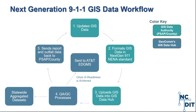Here is the initial general workflow of the data lifecycle in the Next Generation 9-1-1 project. The different colors indicate who is responsible for each step: green indicates the GIS data authority — whether the county or the PSAP — and blue boxes indicate Geocom's GIS Data Hub. At a high level, the initial GIS onboarding process begins with the GIS data being updated by the data authority. They format it in the NENA I3 standard and upload it into GIS Data Hub. GIS Data Hub then performs QA/QC checks and sends reports back to the submitting agency for review and updates. This process continues until they are deemed I3-ready — achieved when the address-to-road centerline match rate is at 98% or above and there are no critical errors.